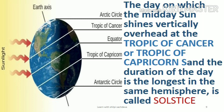Now let's learn what is Solstice. The day on which the midday sun shines vertically overhead at the Tropic of Cancer or the Tropic of Capricorn, and the duration of the day is the longest in the hemisphere, is called Solstice.